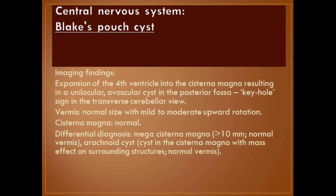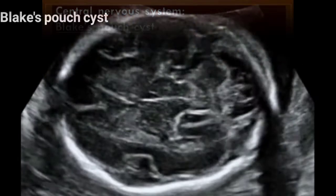Blake's pouch cyst — imaging findings: expansion of the fourth ventricle into the cisterna magna, resulting in a unilocular avascular cyst in the posterior fossa; keyhole sign in the transverse cerebellar view. The vermis is normal size with mild to moderate upward rotation, and the cisterna magna is normal. Differential diagnosis includes mega cisterna magna (more than 10 mm with normal vermis) and arachnoid cyst, in which the cyst is in the cisterna magna with mass effect on surrounding structures and a normal vermis.